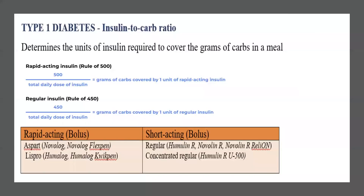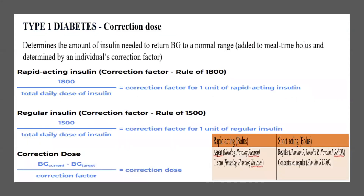For the insulin-to-carb ratio, we have the rule of 500 for rapid acting insulin and the rule of 450 for regular insulin — both are bolus insulins. For the correction factor, there's the rule of 1800 for rapid acting and the rule of 1500 for regular insulin.